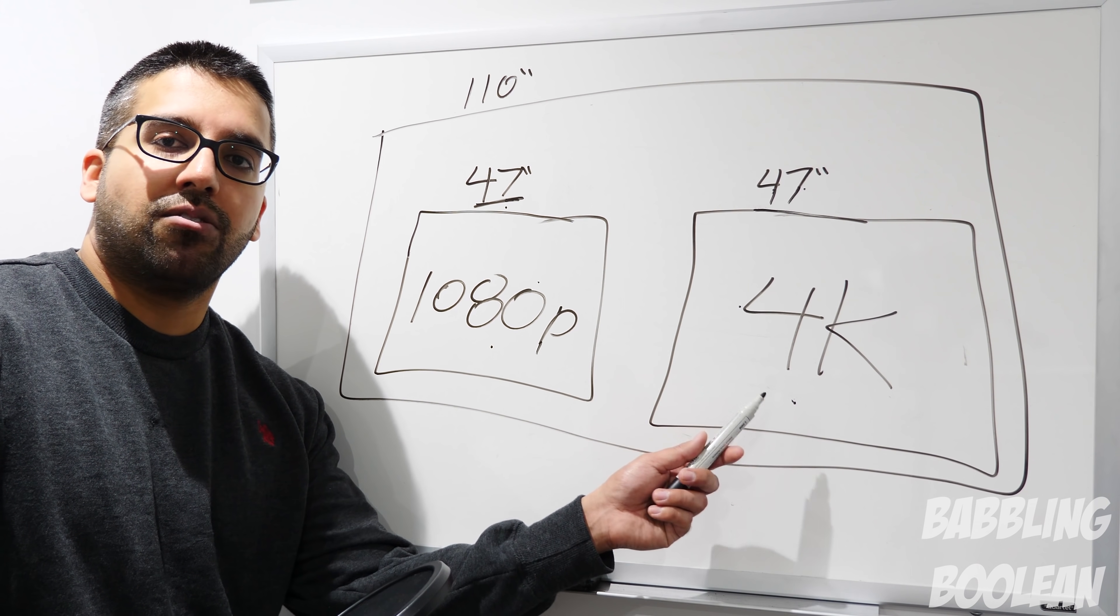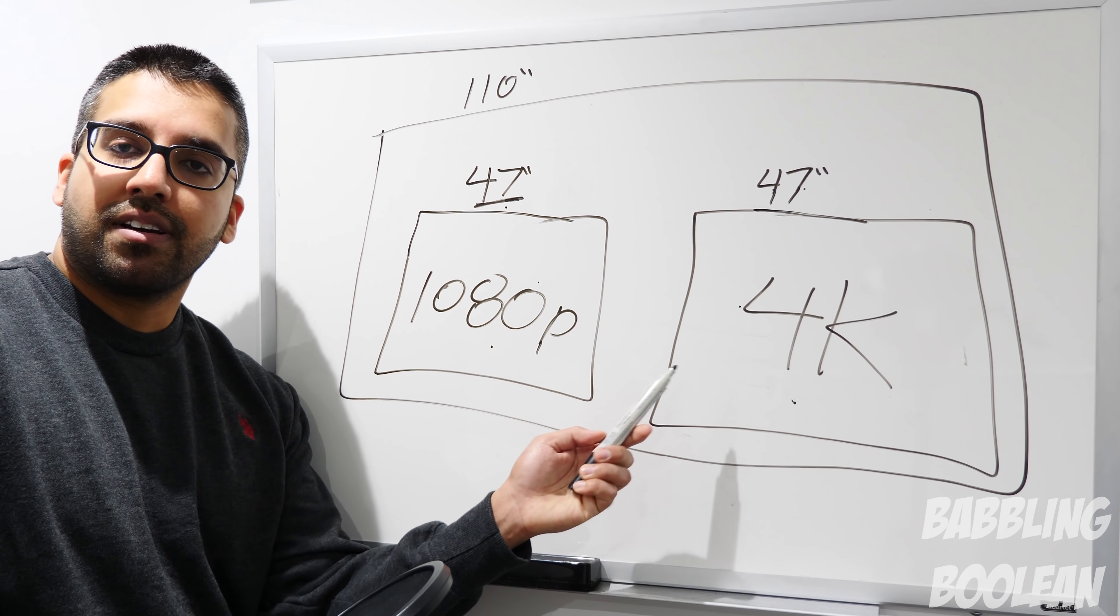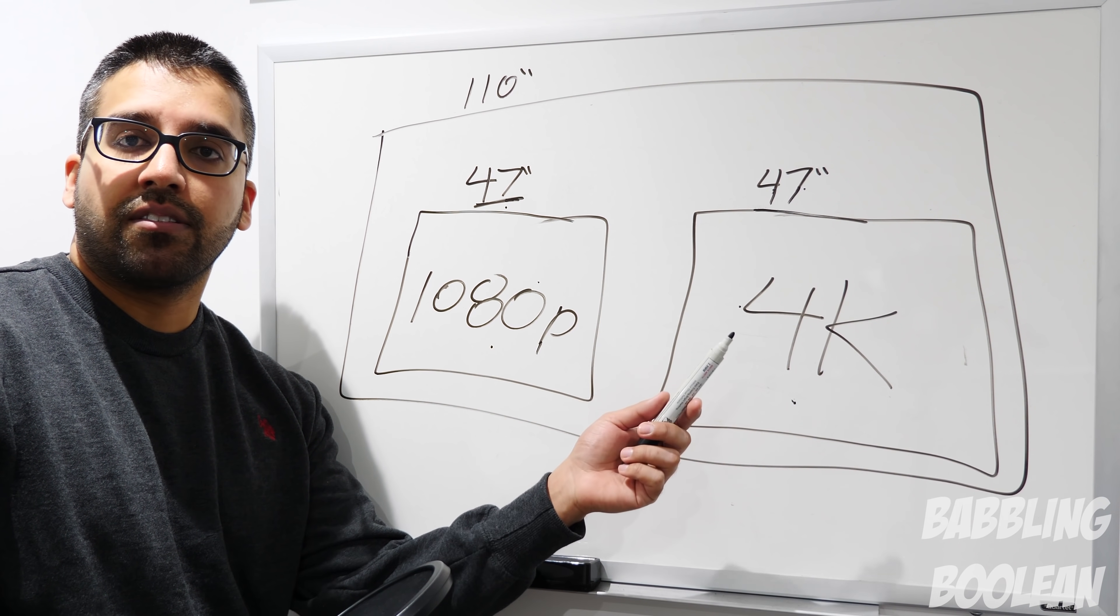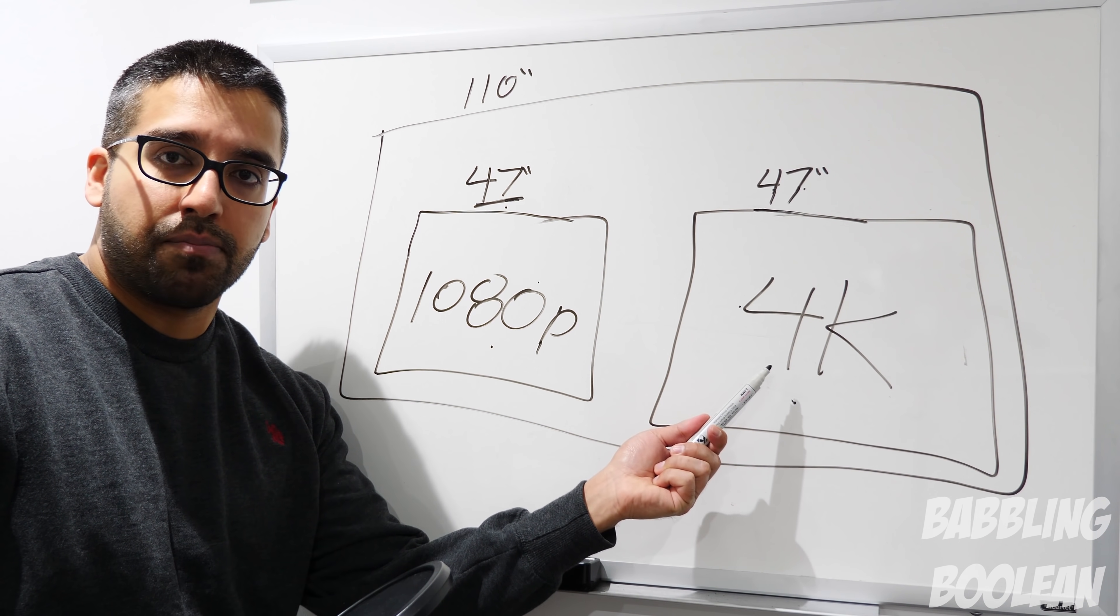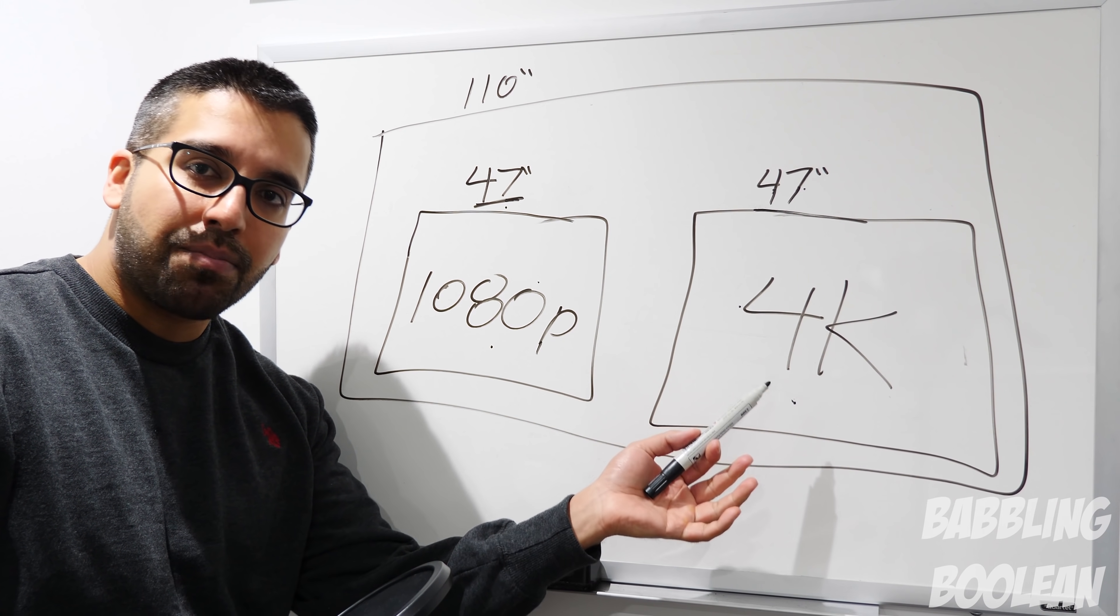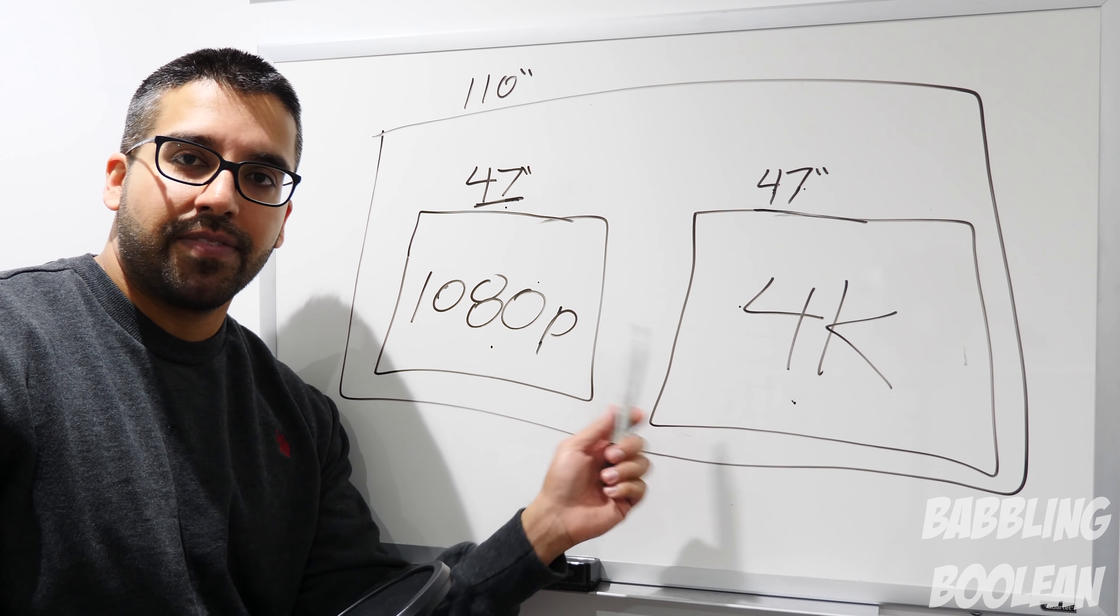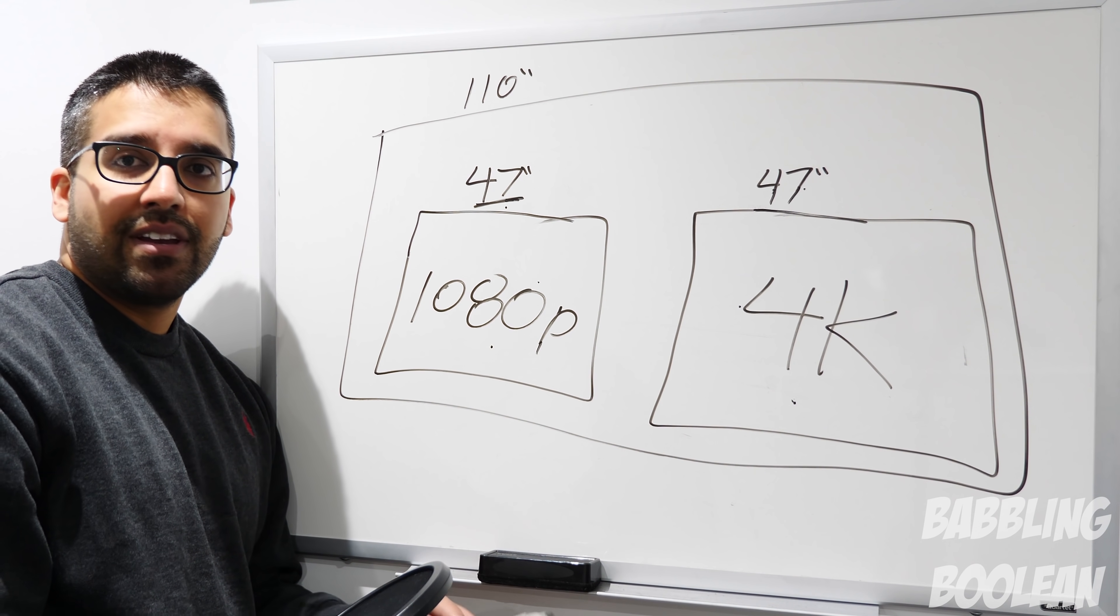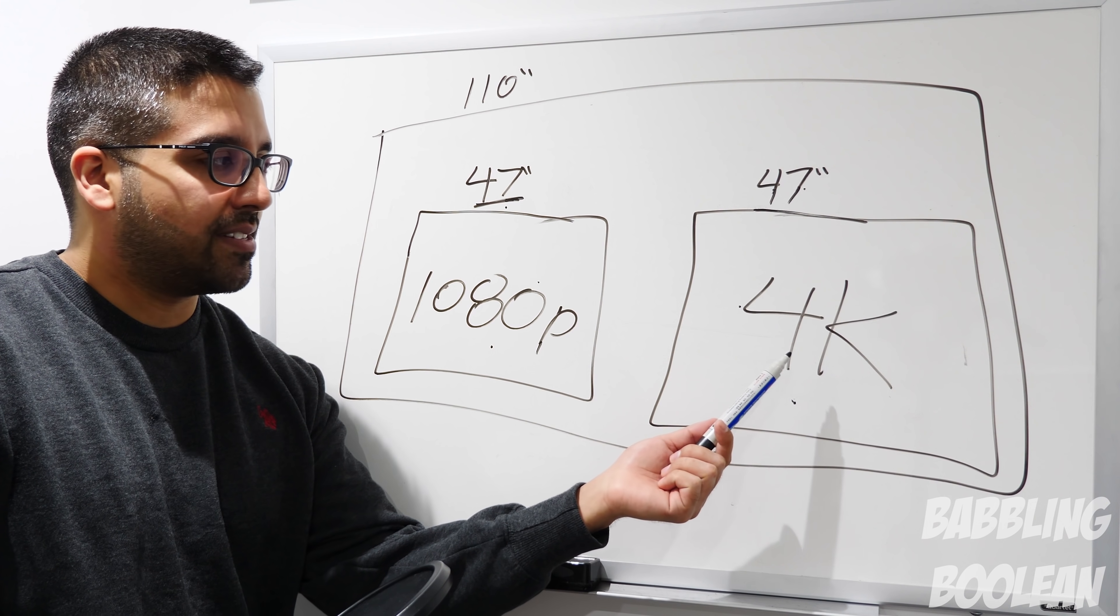The only reason the 4K will look better primarily is because it's the newer technology, so TV manufacturers like Sony, Samsung, they're investing in making the colors look better here, but the sharpness will look very identical. I bought my parents a 1080p TV, 50 inch I think, four years ago. It still looks better, if not just the same, as 4K TVs that are 50 inch now, and they're more expensive, ironically.